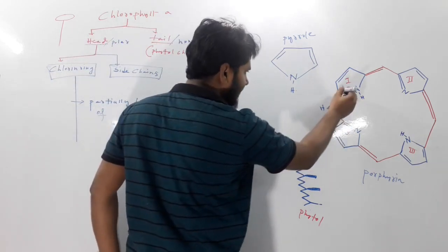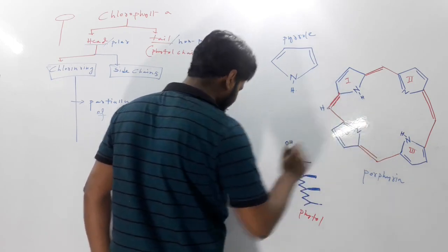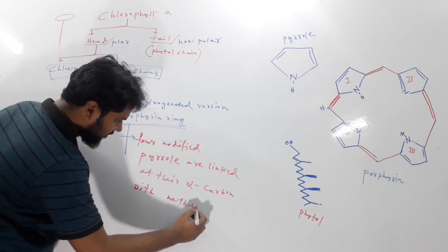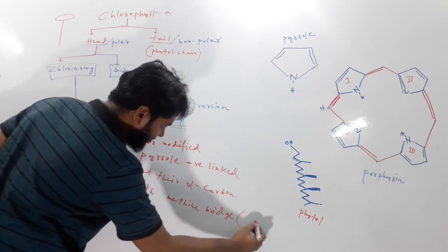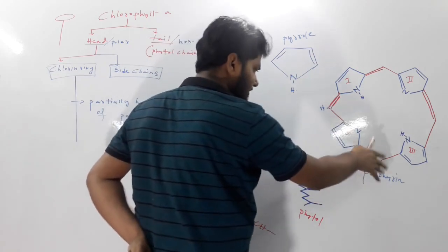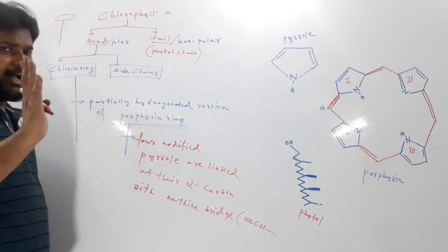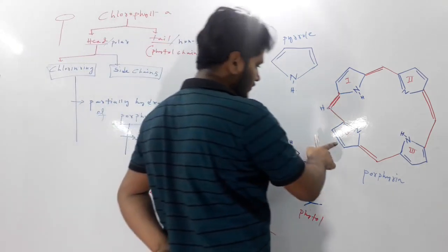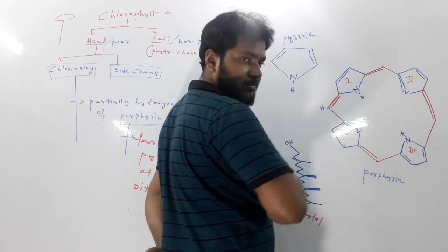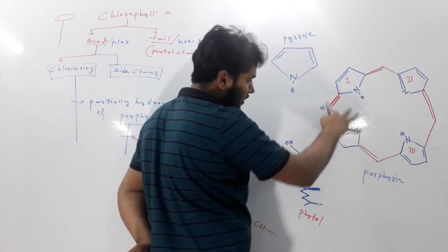You can see that if this is the NH group, then this is the alpha carbon. They are linked at their alpha carbons via methine bridges. So this is the porphyrin ring. The chlorine ring is just one partially hydrogenated structure of porphyrin — in ring number four, if you substitute the double bond with hydrogen, the porphyrin becomes a chlorine ring.